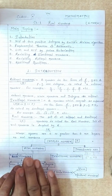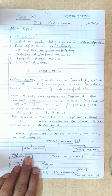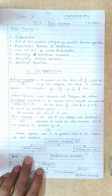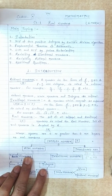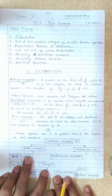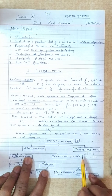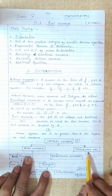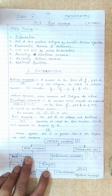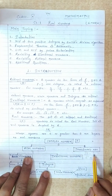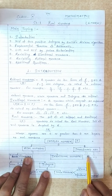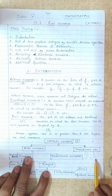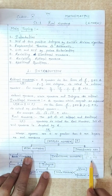Real numbers we will study in this chapter. Imaginary numbers are in the 11th class syllabus. An imaginary number is called root of minus 1. When you go to 11th class, you will use the symbol iota to denote it. Root minus 1 is equal to iota, and iota squared is equal to minus 1.